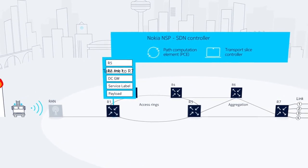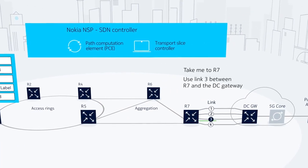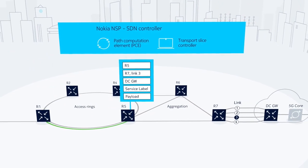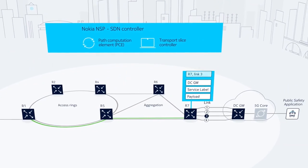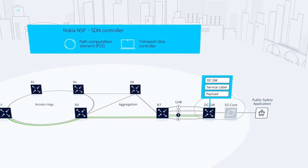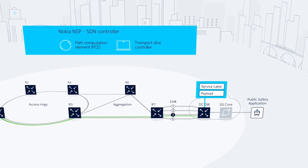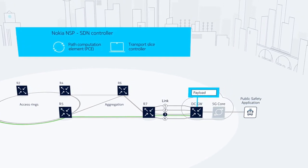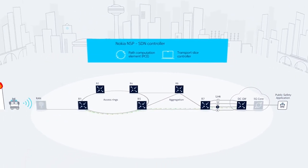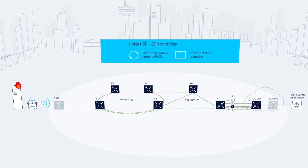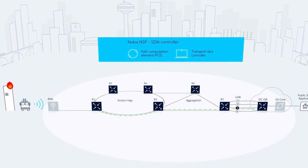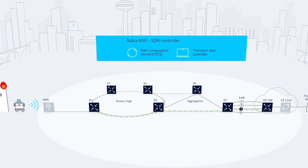The service label identifies that it is one of the applications of the public safety slice. These labels can be general, or they can be specific if you have load balancing or latency requirements. When the packet arrives at its destination, the DC Gateway router removes the last label, reads the service label, and processes the payload, forwarding it on to the public safety application. By automating SDN-based traffic engineering to create end-to-end backhaul paths, time and cost are reduced, making it far more efficient than manually setting paths at every node.